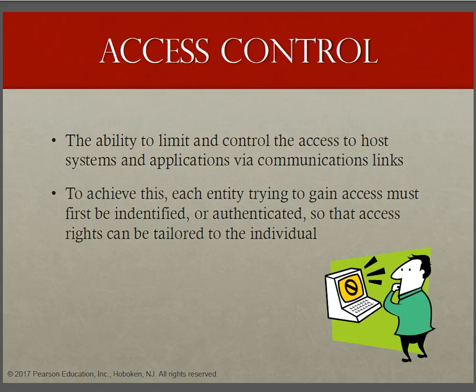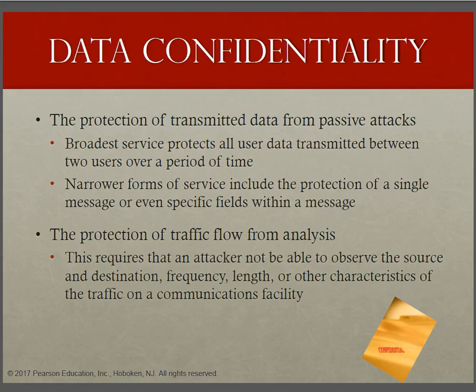The second category is access control. In the context of network security, access control is the ability to limit and control the access to the whole system and applications via communication links. In our online class we will work with Cisco Packet Tracer software to configure routers to limit access control. To achieve this, each entity trying to gain access must first be identified or authenticated so that access rights can be tailored to the individual.